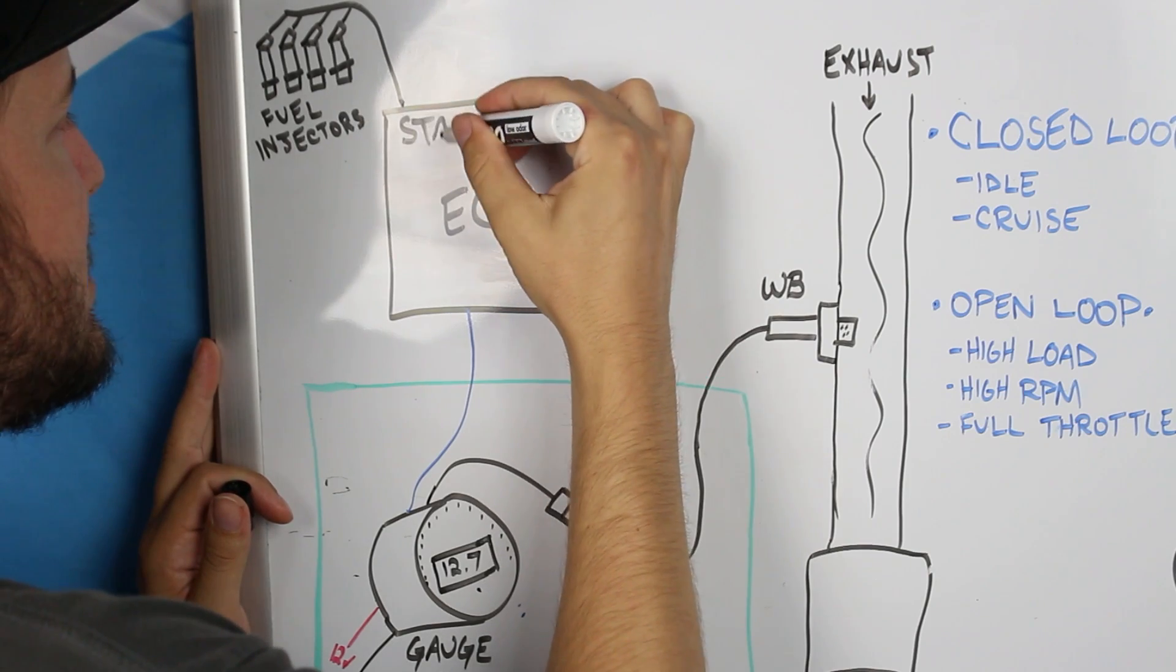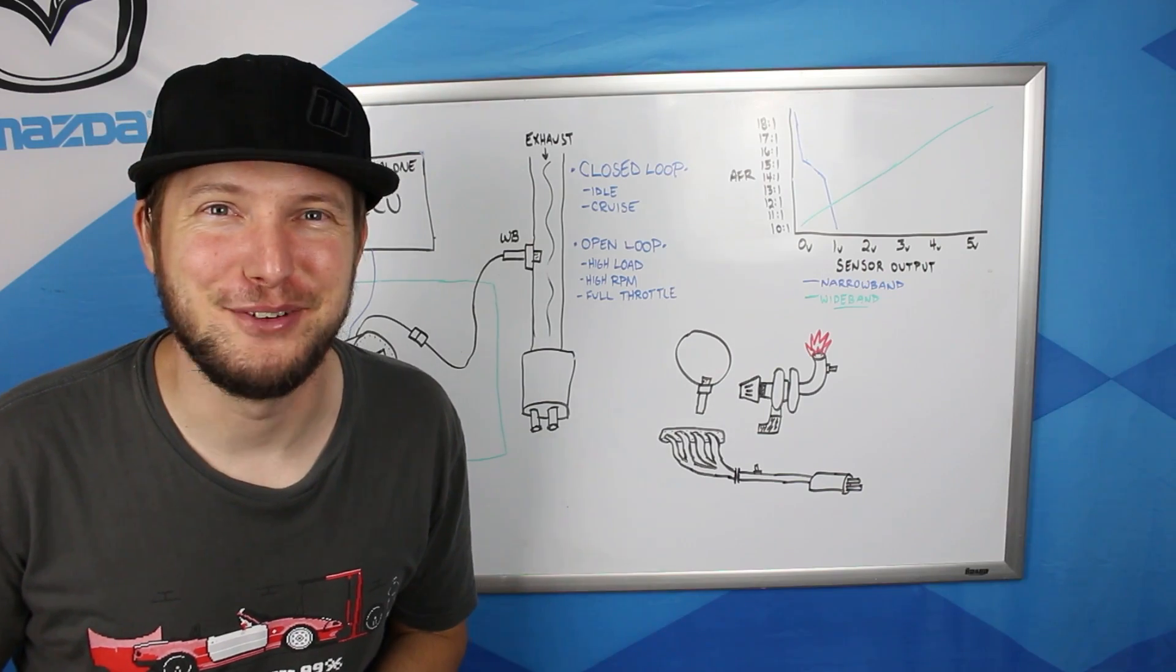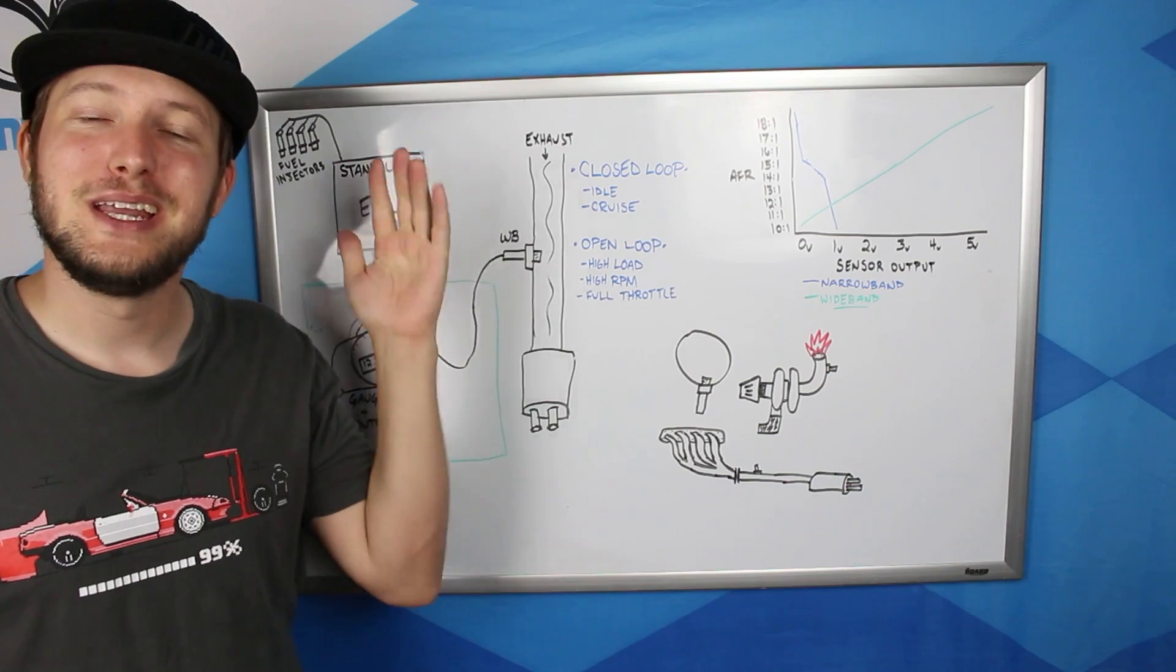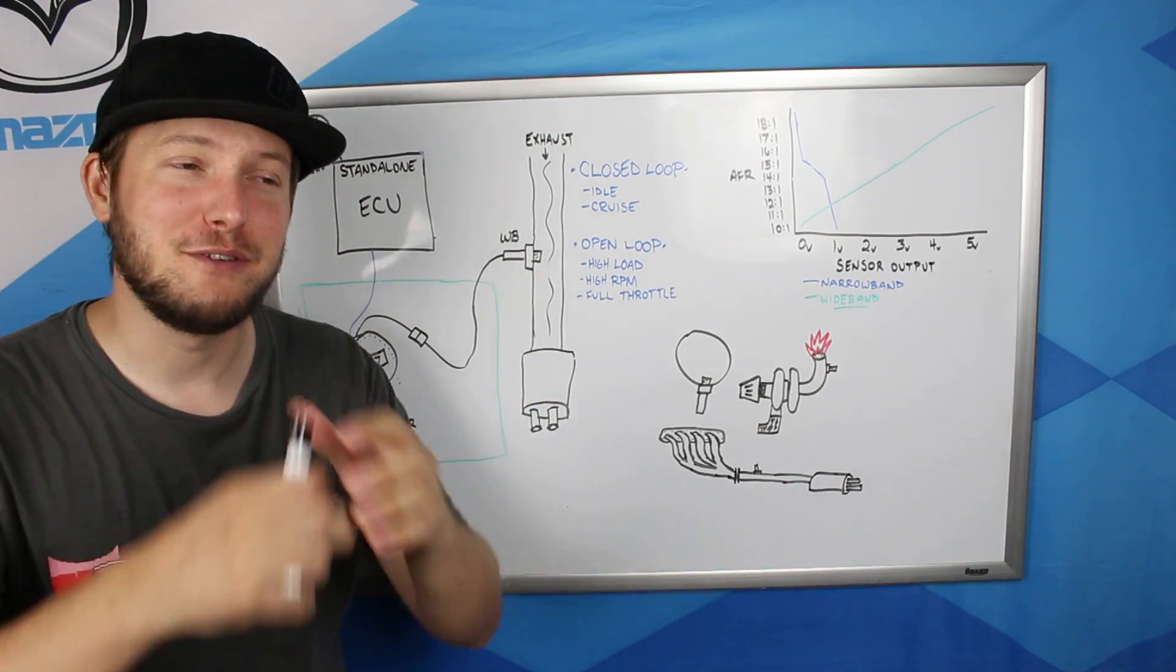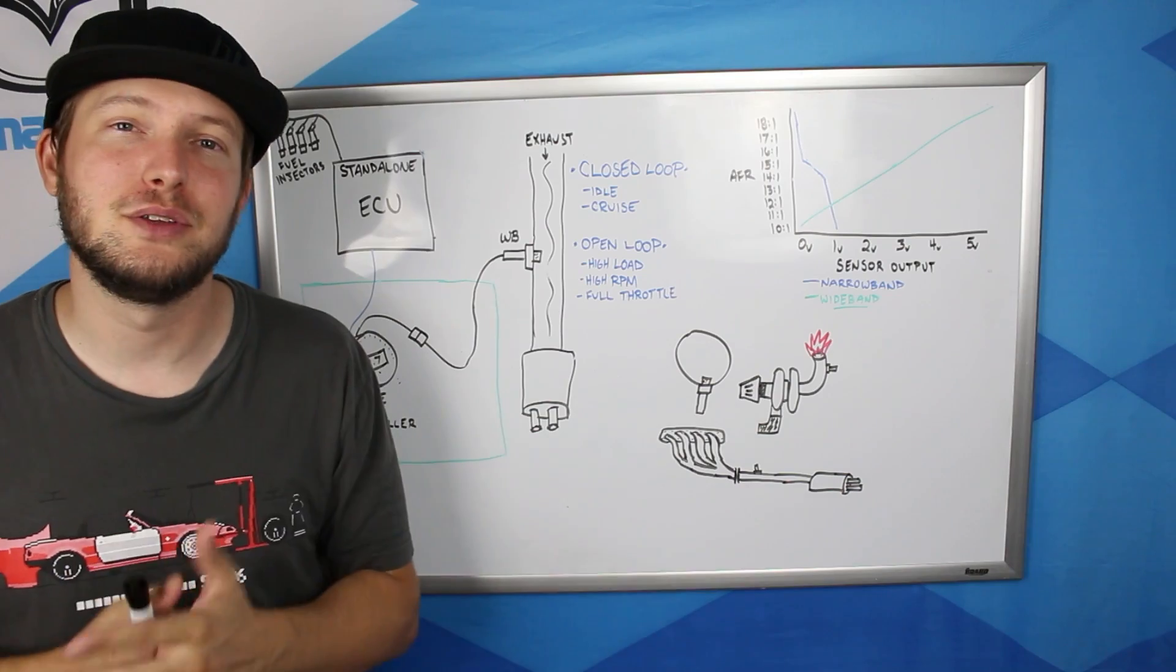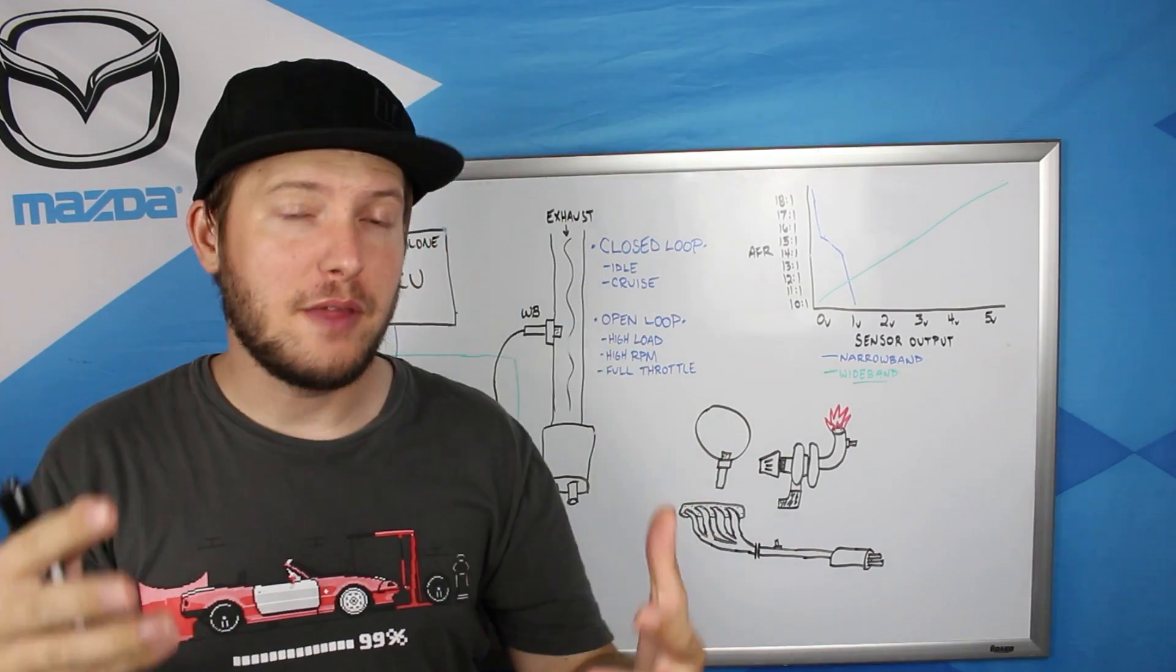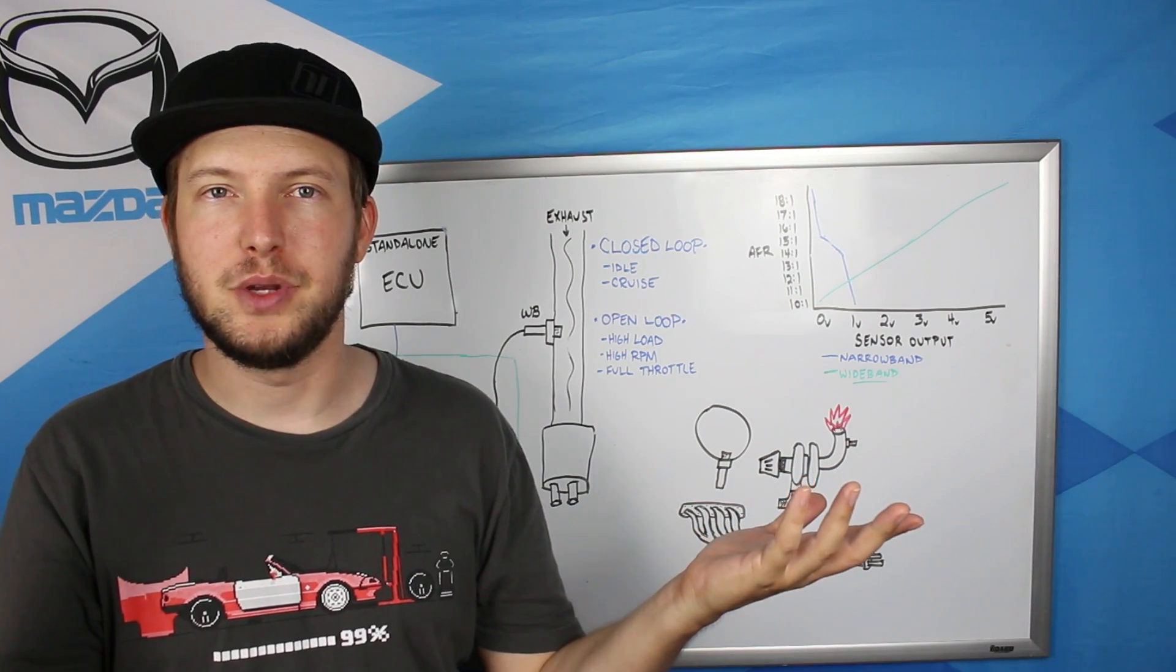All right, let's move on to our next topic here, the standalone ECU. And now you speak of my language is what the O2 sensor is saying to the ECU. Now that you've installed a standalone in the car, because a standalone ECU can fully understand the signal that a wideband oxygen sensor is outputting. In fact, standalone ECUs actually require that there is a wideband. Otherwise, it's literally impossible to tune it.